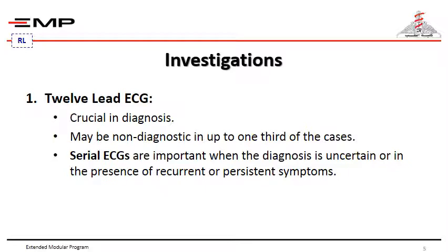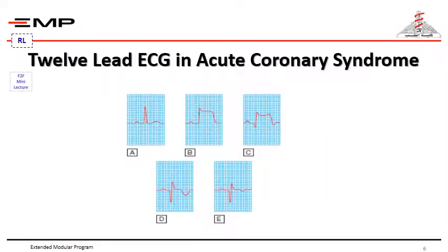Investigations: the 12-lead electrocardiogram is crucial in the diagnosis of acute coronary syndrome but might be non-diagnostic in up to one-third of cases. Serial ECGs are important when the diagnosis is uncertain or in the presence of recurrent or persistent symptoms.